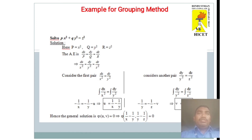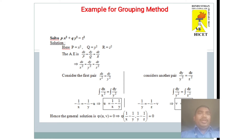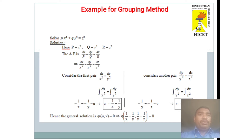For example, solve Px² + Qy² = z². We compare with the general form of Lagrange's linear equation and identify: capital P = x², capital Q = y², capital R = z². First, we find the auxiliary equations written as dx/P = dy/Q = dz/R, which becomes dx/x² = dy/y² = dz/z² after substituting the values.